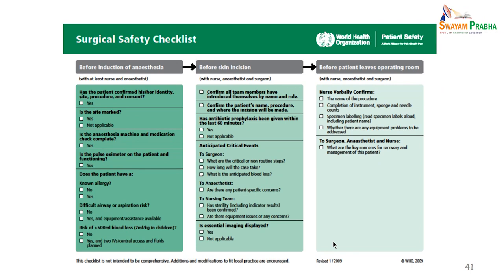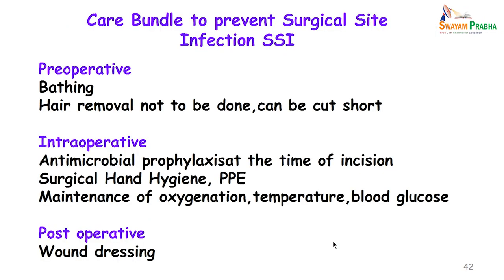The last part covers care bundles for surgical site infection prevention. We start with the WHO surgical safety checklist, which should be used preoperatively before any operation. The patient before coming to the OT should have been bathed; hair removal should not be done, though if necessary hair can be cut short. Intraoperative antimicrobial prophylaxis should be given at the time of incision or just half an hour before. Surgical hand hygiene should be done, appropriate sterile personal protective equipment worn, maintenance of oxygenation, temperature and blood glucose should be appropriate, and postoperative wound dressings done at the appropriate time.